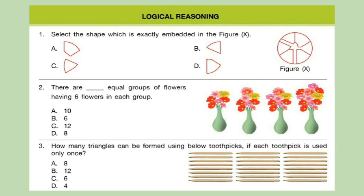Question 2: There are dash equal groups of flowers having six flowers in each group. Question 3: How many triangles can be formed using the below toothpicks if each toothpick is used only once?